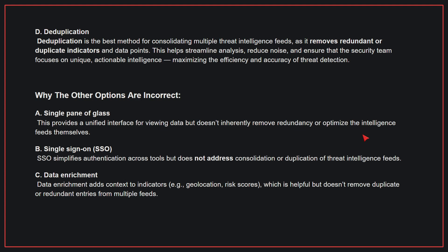Why the other options are incorrect: A. Single pane of glass — provides a unified interface for viewing data, but doesn't inherently remove redundancy or optimize the intelligence feeds themselves. B. SSO — simplifies authentication across tools, but does not address consolidation or duplication of threat intelligence feeds. C. Data enrichment — adds context to indicators, which is helpful, but doesn't remove duplicate or redundant entries from multiple feeds.